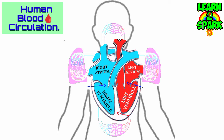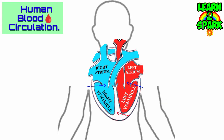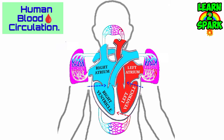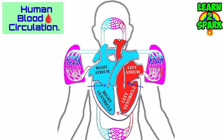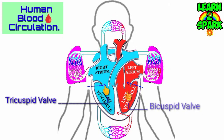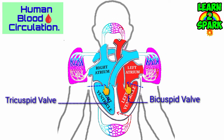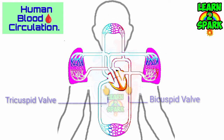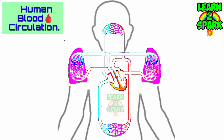A thick muscular wall called the septum separates the heart into left and right sides. Blood flow is mainly controlled by the tricuspid and bicuspid valves, making the blood flow unidirectional only.